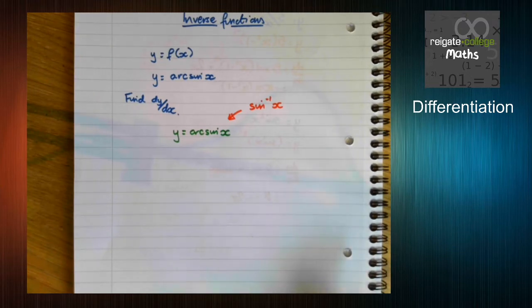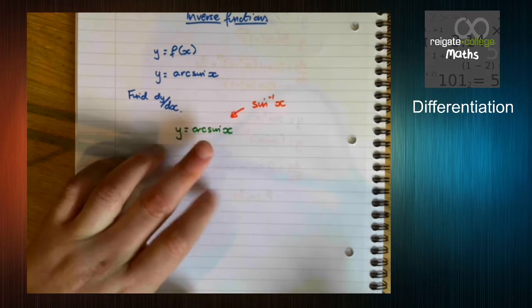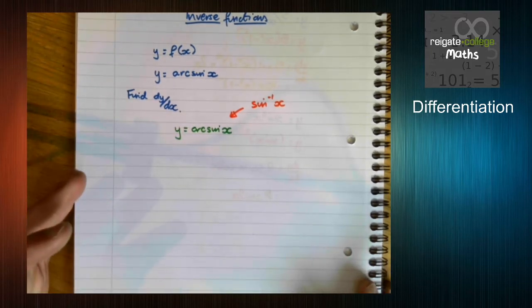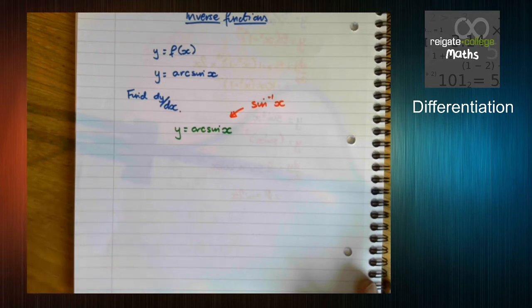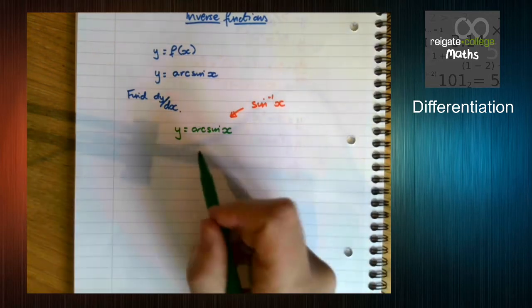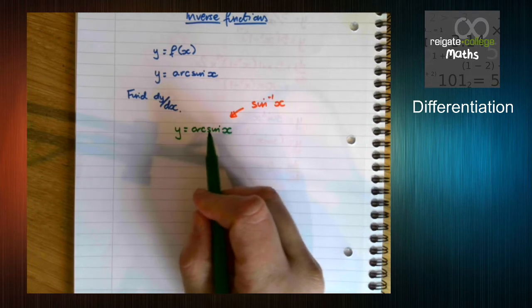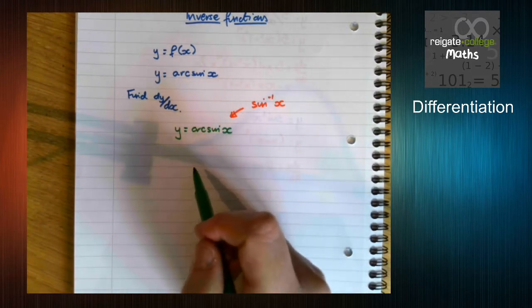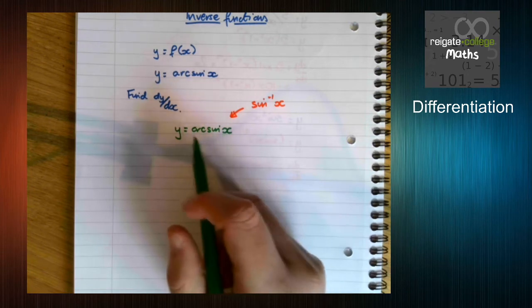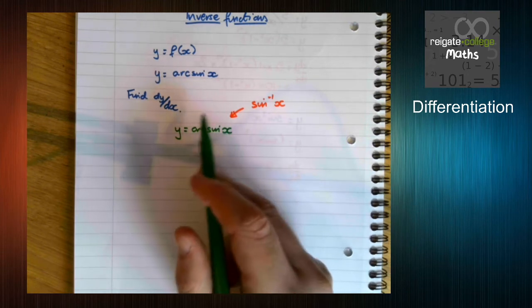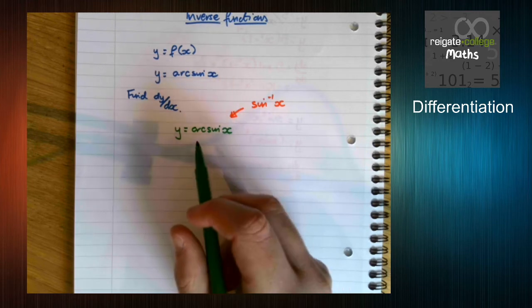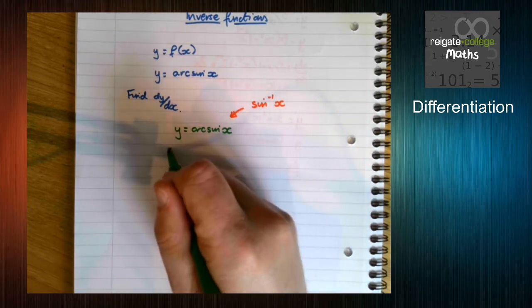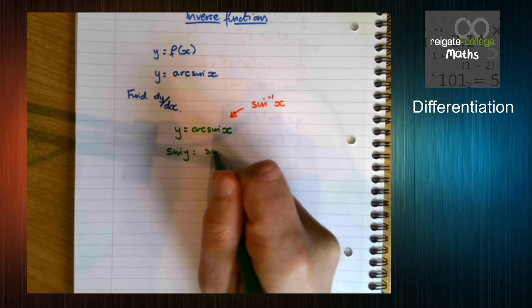So how do we deal with this? Well, we don't know how to differentiate arcsin, but we do know how to differentiate sine. So we can rearrange this equation. Instead of adding something to both sides or dividing by something on both sides, what we're going to do is think about how we can undo inverse sine. And we do that by writing sine in front of both sides.